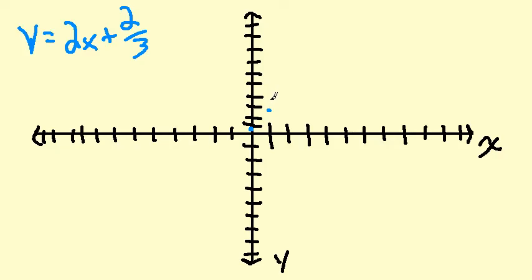And then up 2, 1, 2 and over 1, making sure you're still kind of at the 2 thirds. And then you go ahead and draw your line to connect the dots. So there's the first way: you can just kind of guess at where the 2 thirds should be, where the fraction should be on the intercept and go from there.